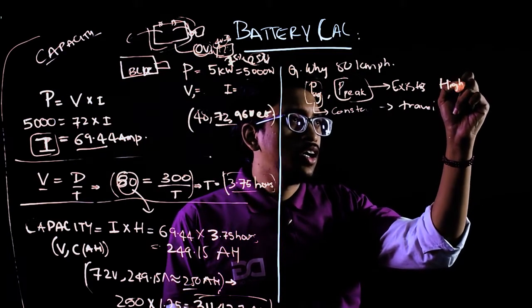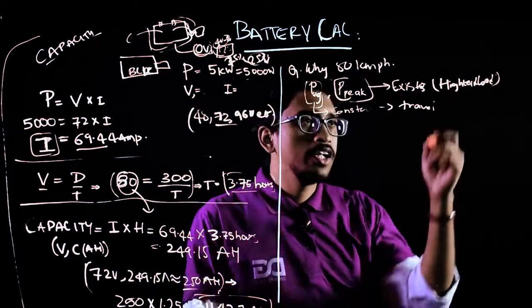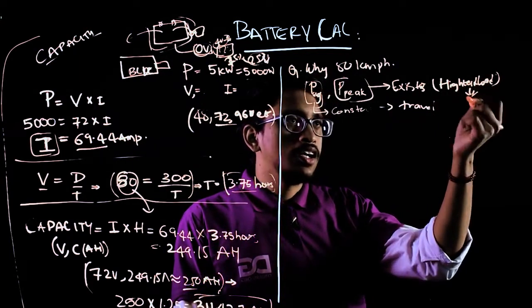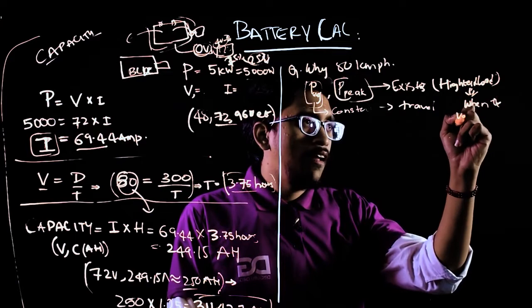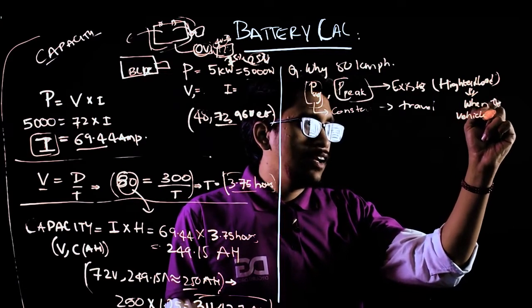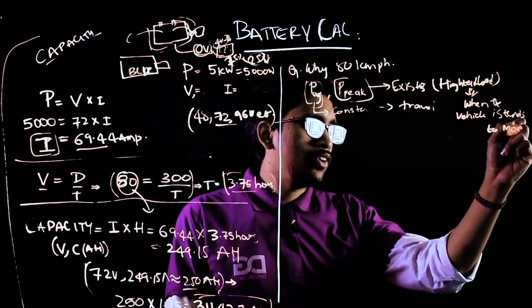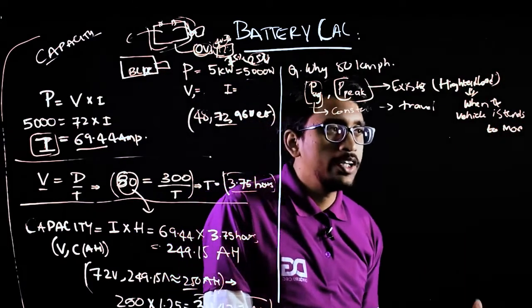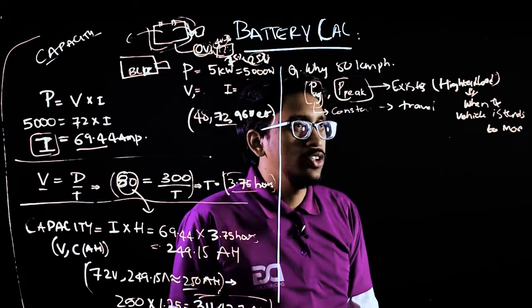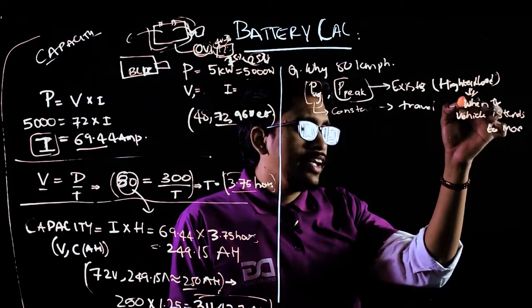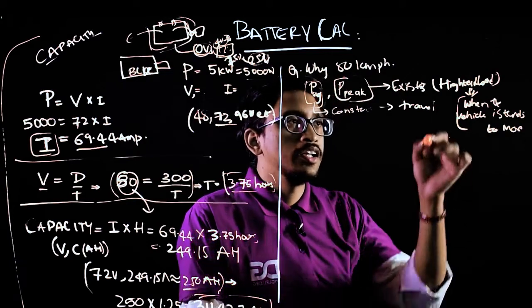The highest load is on the vehicle when the vehicle tends to move, at the initial stage of the movement. The whole power, the whole mass and load of the vehicle is concentrated on the motor itself. At the initial stage, before the initial moment of the vehicle, this kind of peak exists at these conditions only.